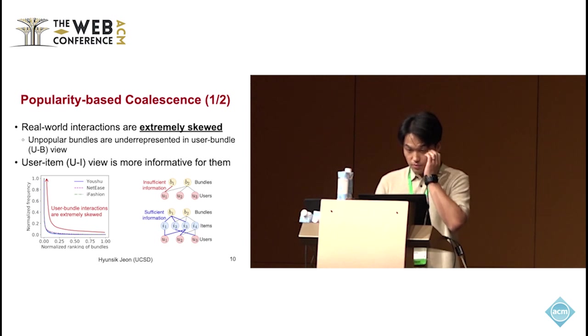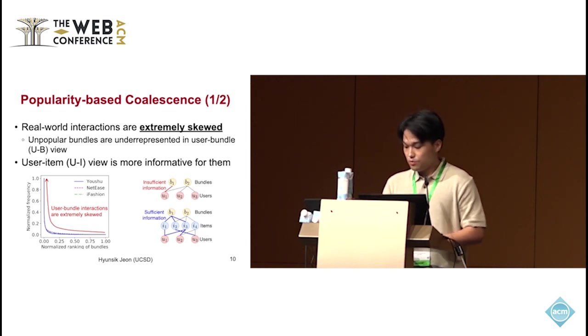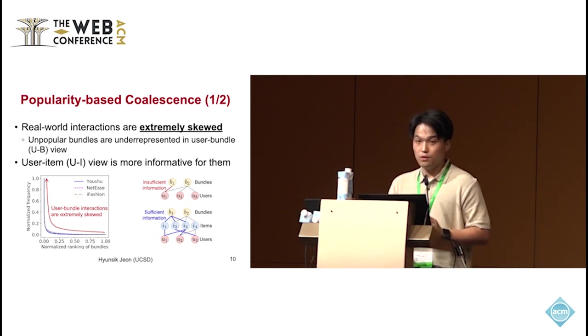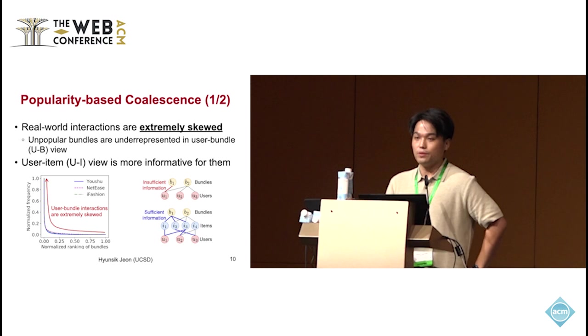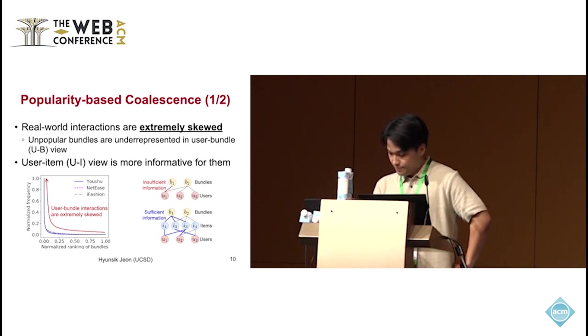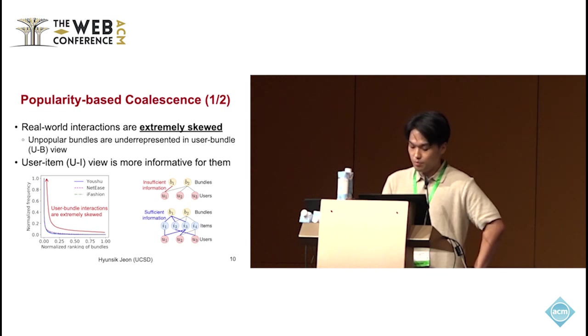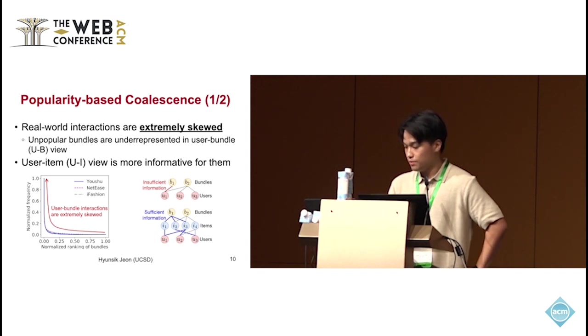To obtain the final relevance score between users and bundles, we need to effectively integrate the two scores from the two different views. However, real-world user-bundle interactions are extremely skewed. This means that less popular bundles might be underrepresented in user-bundle view. Instead, they are sufficiently represented in user-item view, as shown in the figure. So we handle this by using a popularity-based coalescence strategy that adjusts the influence of each view based on the bundle's popularity.